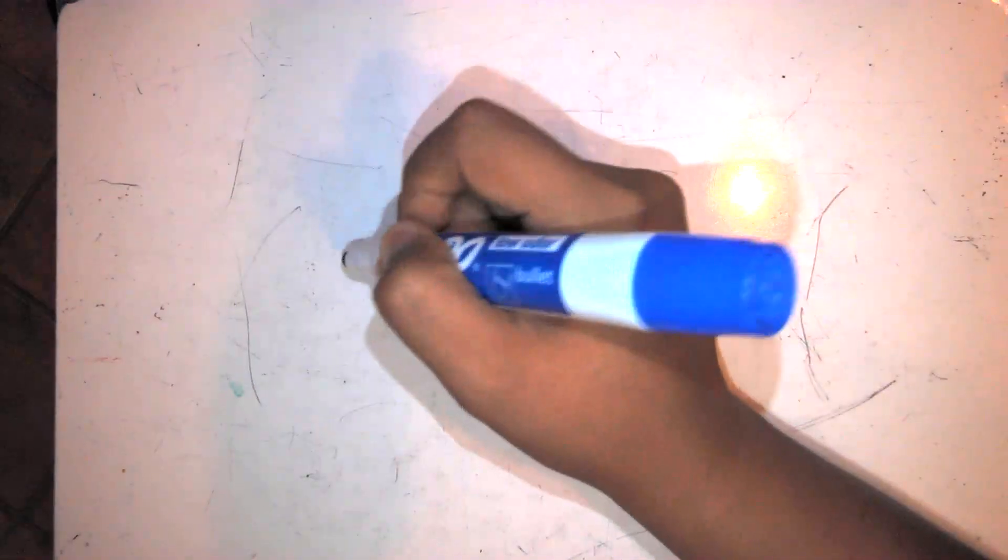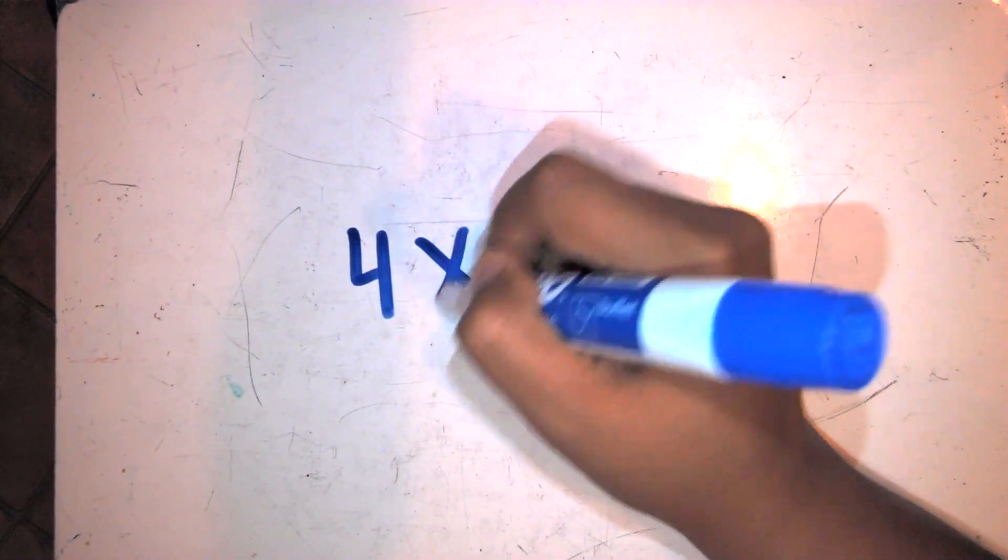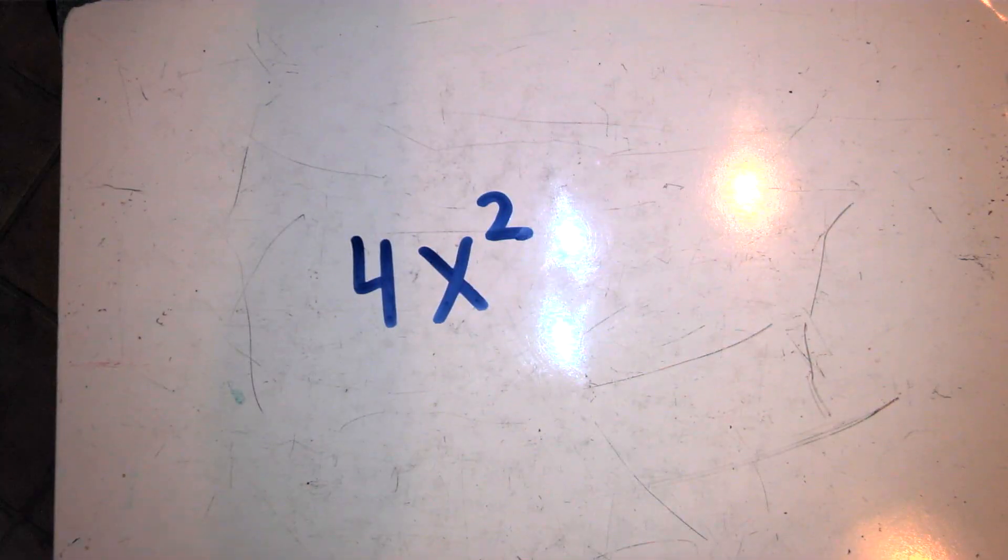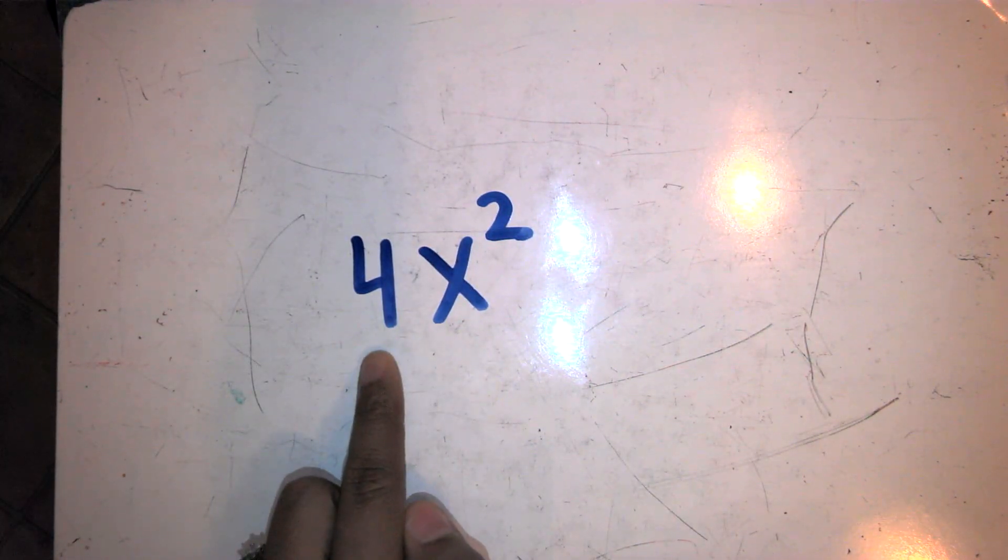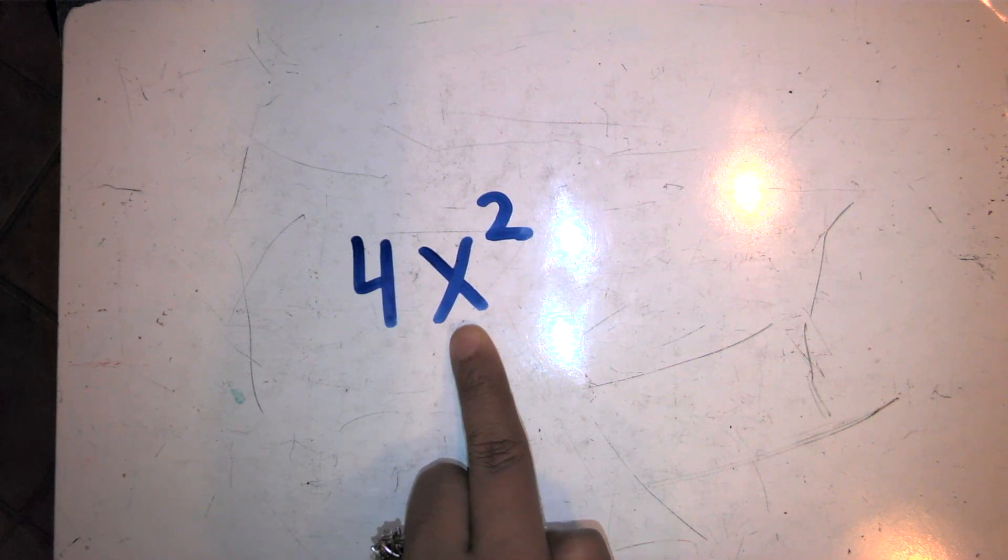Today we're going to talk about algebraic terms and understanding their parts and how they relate to each other. The number in front of a variable is called the coefficient. The variable is the letter that represents an unknown.